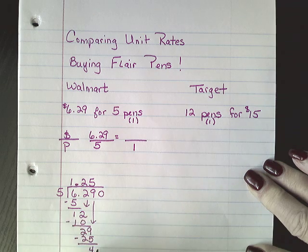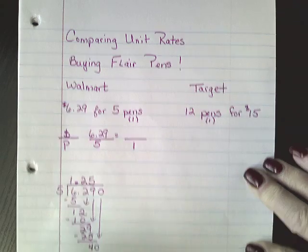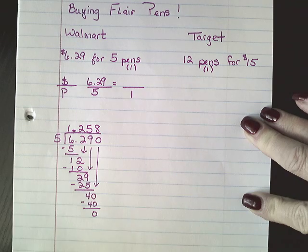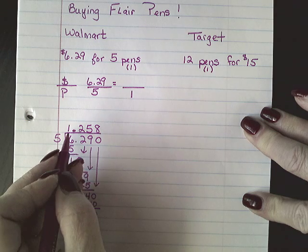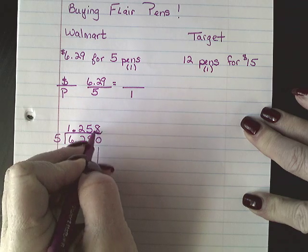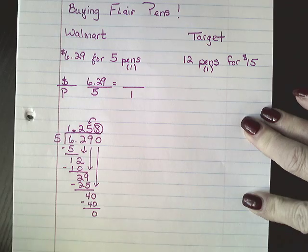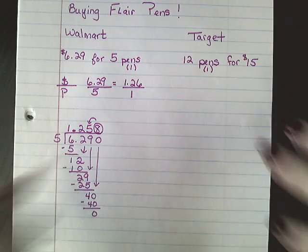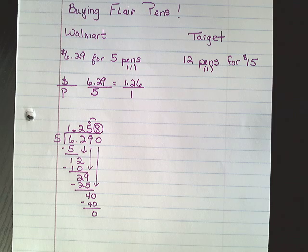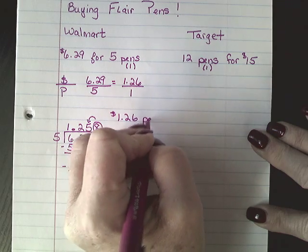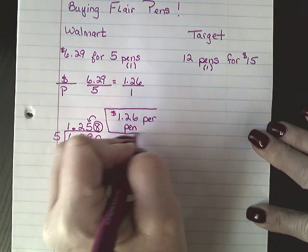I'm going to add a zero and bring it down because I know that will go in evenly — that's eight, so five goes into forty. Now, money only has two decimal places for change. So I can't put down 1.258 because that's not representing money. The eight is going to round that five up to a six. So this is going to be $1.26 per pen — that's my Walmart deal.